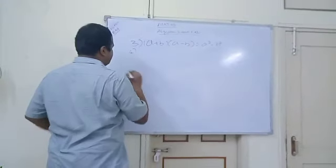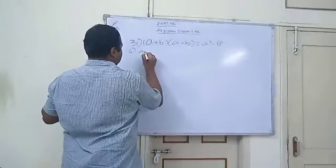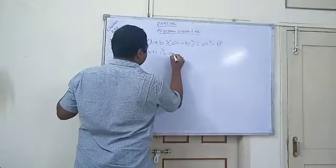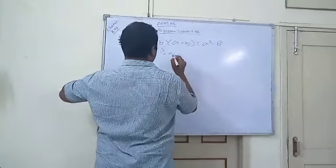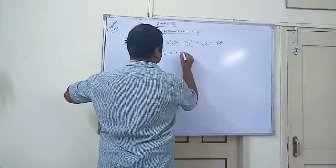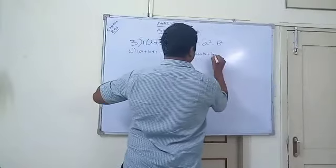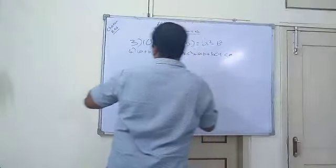Next one. A plus B plus C whole square. We go to A square plus B square plus C square plus 2AB plus 2BC plus 2CA. It is one of the algebraic identities.